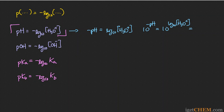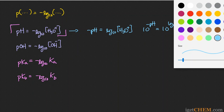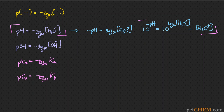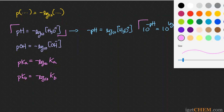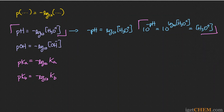We then raise both sides to the power of 10, which undoes the logarithm on the right side, leaving just the H+ concentration. This formula gives the relationship needed to calculate H3O+ from pH. On your calculator, this exponentiation function is either an inverse log button or a '10 to the power x' button — enter negative pH and press either one.